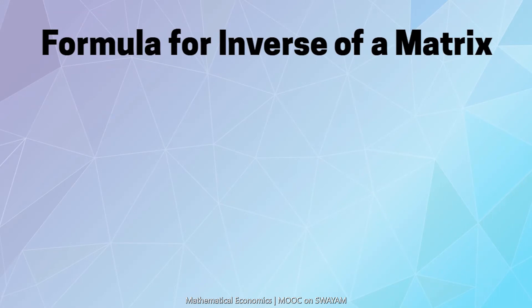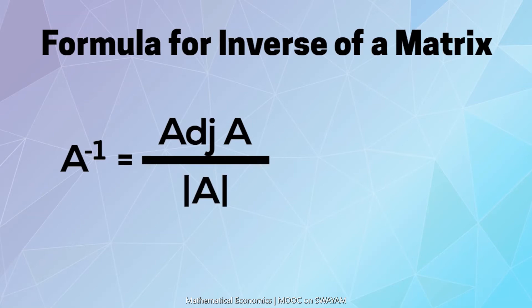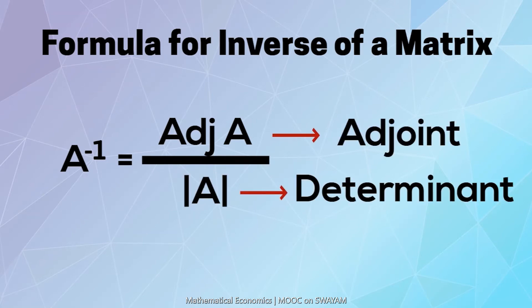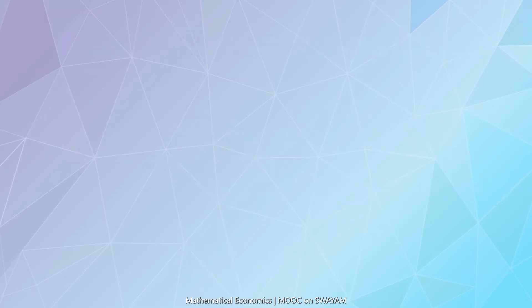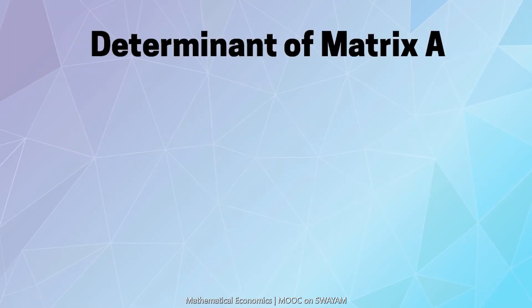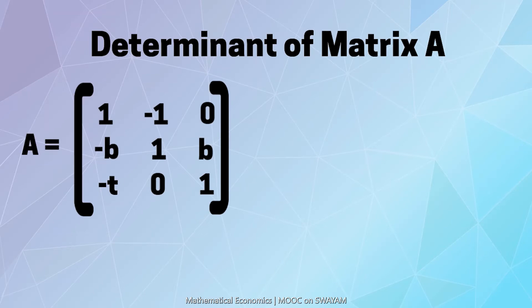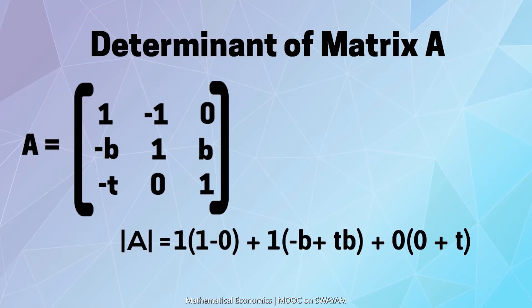This is the formula for finding A inverse. It must be noted that the determinant of A must not be equal to 0. Proceeding to find A inverse, we first find the determinant of A. Since the determinant is not equal to 0, a solution exists.